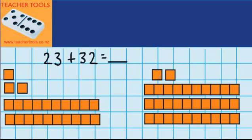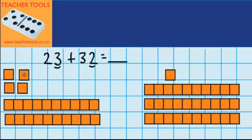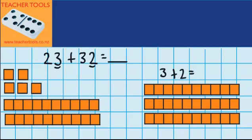Now I'm going to start by adding my 1's together. I've got 3 ones here and I want to add 2 ones. I think it's going to equal 5, but let's try that using the materials. So I've got these 3 ones and I'm moving over these 2 ones. And you can see we were right — we had 3, we added 2, and we got 5.